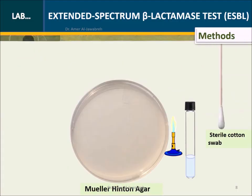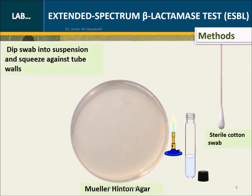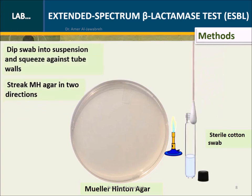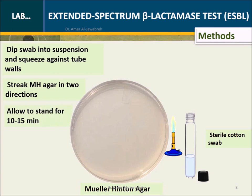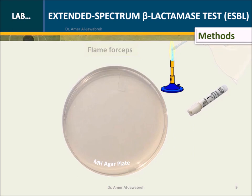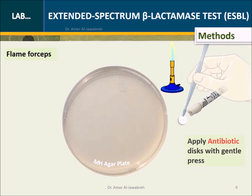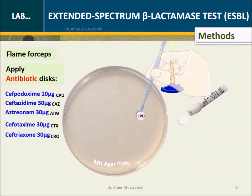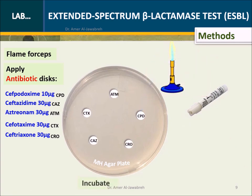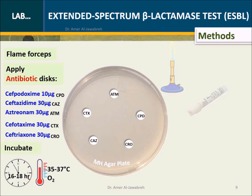Screening test method: dip swab into the suspension and squeeze against tube walls, then streak Mueller-Hinton agar in two directions. Allow to stand for 10 to 15 minutes. Under aseptic technique, apply the appropriate discs and press gently.